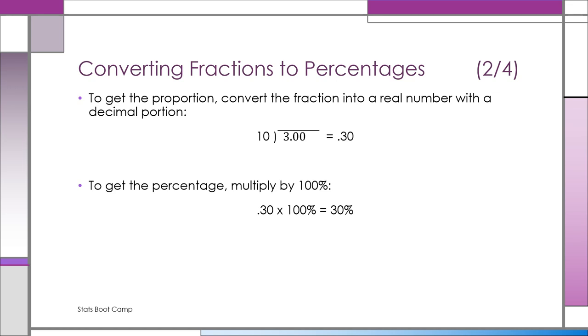Now, if you want to get it as a percentage, take 0.30 times 100%, and you get 30%. So these are all equivalent: 3 tenths, 0.3, and 30%.